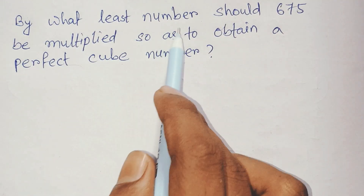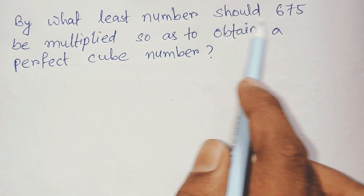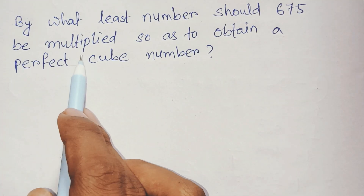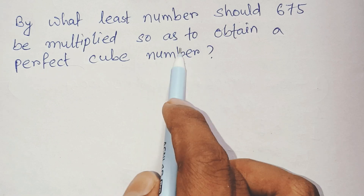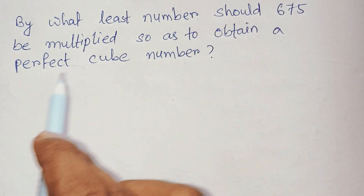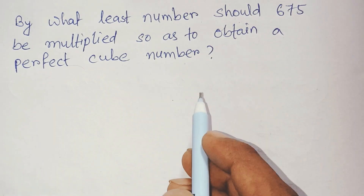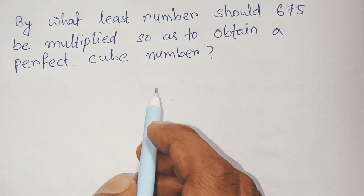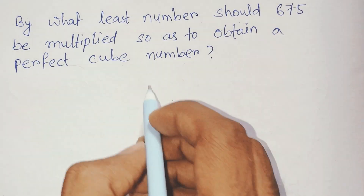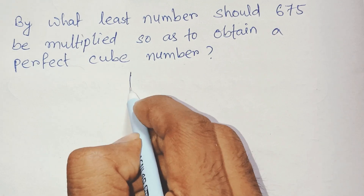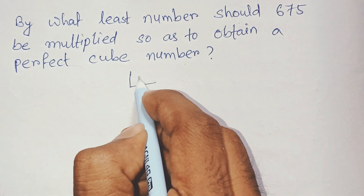By what least number should 675 be multiplied so as to obtain a perfect cube number? To obtain a perfect cube number, we have to factorize 675.